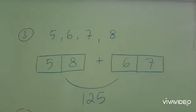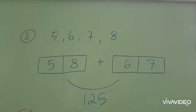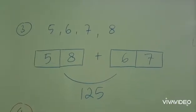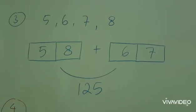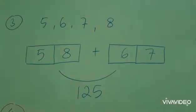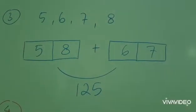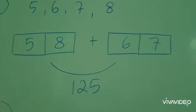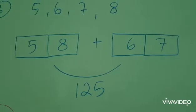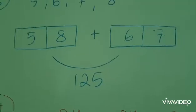For number 3, find the number that can make a result of multiple 5. Jadi dari angka 5, 6, 7, 8 ini silahkan dibentuk angka-angka yang apabila dijumlahkan menghasilkan kelipatan 5. Jadi angkanya adalah 58 plus 67. 58 ditambah 67 sama dengan 125.